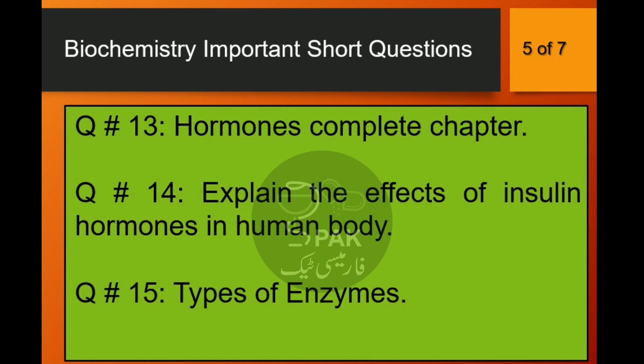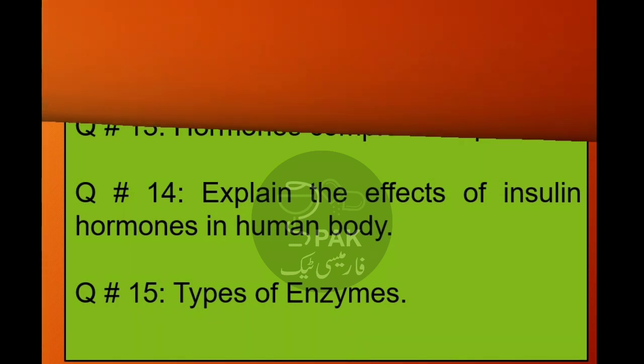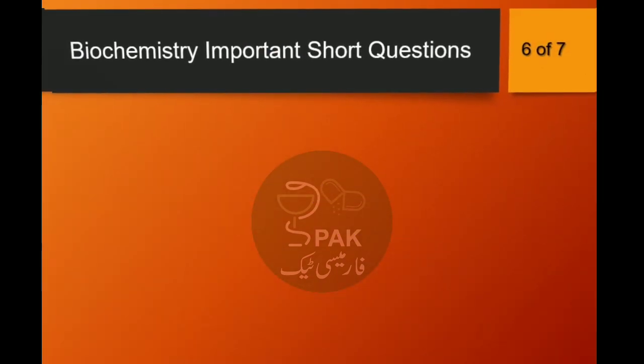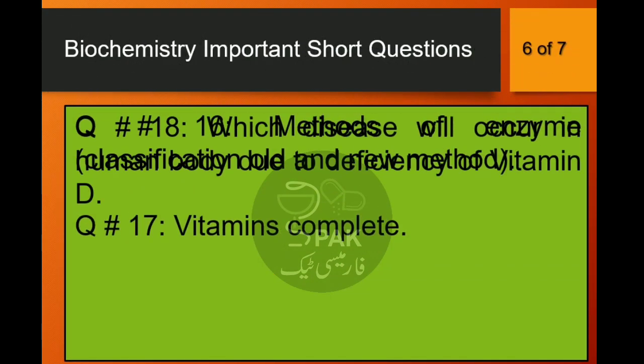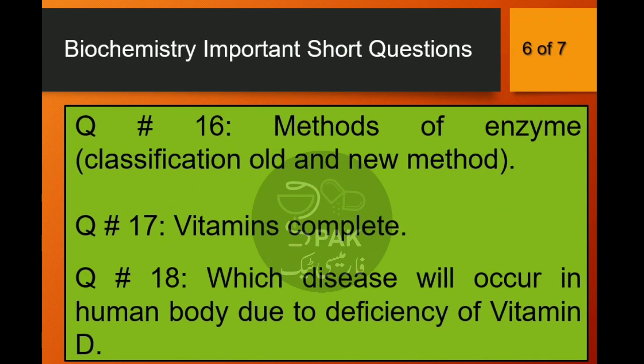Question number 15: Types of enzymes? Question number 16: Methods of enzyme classification — old and new method?